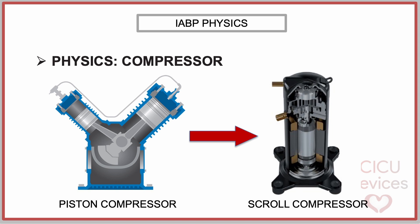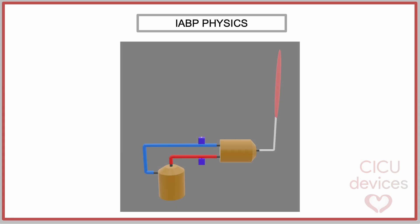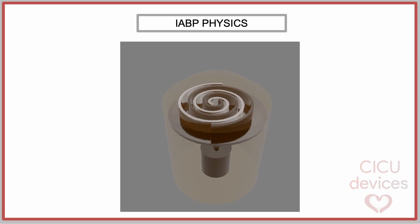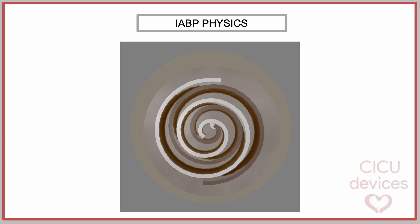However, the current versions use a scroll compressor. The scroll compressor offers several advantages, such as improved efficiency, reduced noise and vibration, lower frequency of mechanical failures, and a smaller size. In this animation, we can see how the scroll compressor works. It consists of two interconnected spiral-shaped metal pieces called scrolls, one fixed and one orbiting. The orbiting scroll moves in a circular motion within the fixed scroll, creating crescent-shaped pockets that compress the air.